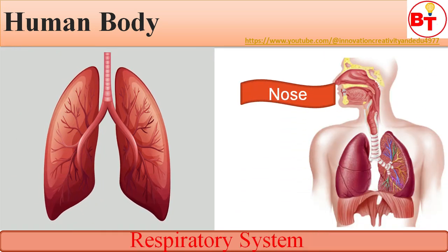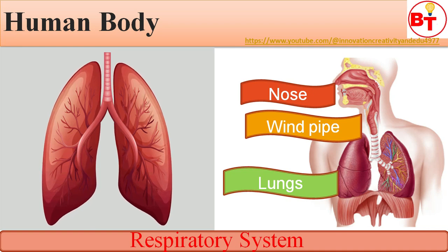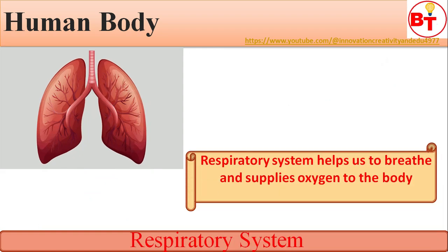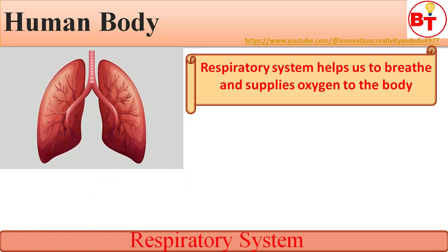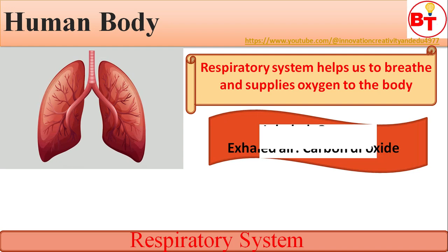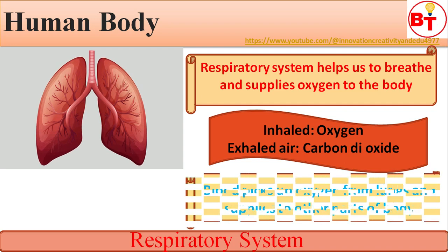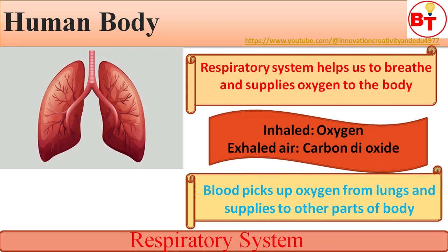Now the respiratory system. This system includes the nose, windpipe, and the lungs — with lungs being the major part. The respiratory system helps us to breathe and supplies oxygen to our body. We inhale oxygen and exhale carbon dioxide. Blood picks up oxygen from the lungs and supplies it to other parts of the body.